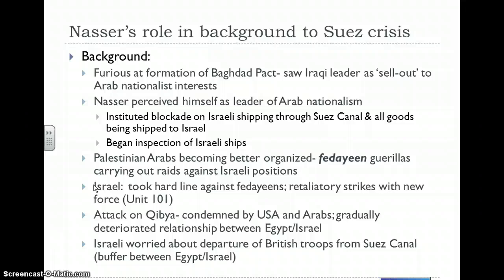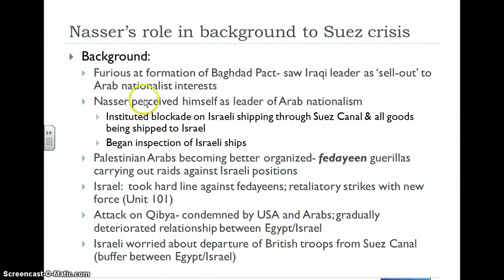There was one particular attack that really set the relationship between Egypt and Israel in a bad direction. It occurred in the Jordanian village of Kibya in October 1953, after an attack on Israel that killed a mother and her children. This particular raid in Kibya saw the deaths of 69 people, most of them women and children. It was strongly condemned by the United States and Arab countries, and it started a deterioration of the already fragile relationship between Egypt and Israel.